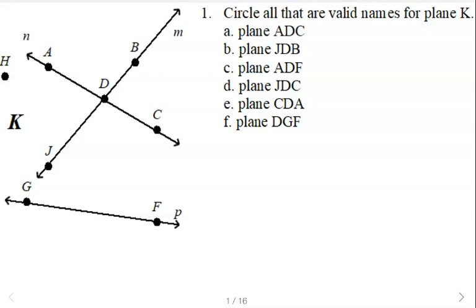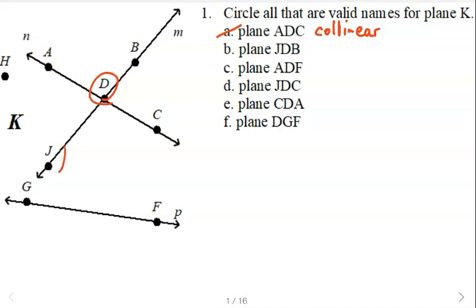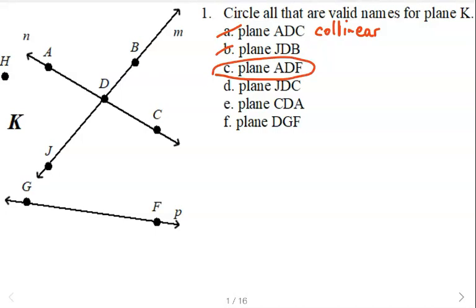When checking, we need to see if those three points are in the plane and are they non-collinear. If they're on the same line, that's ruled out — there can be infinitely many planes that go through a single line. ADC are collinear, so that is not a valid name. JDB — those are collinear. ADF — those are not collinear and they're all three in that plane, so that's one valid way. JDC — not collinear, so that would be another valid way.